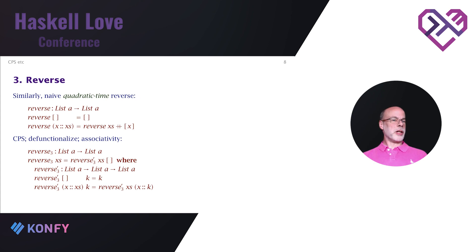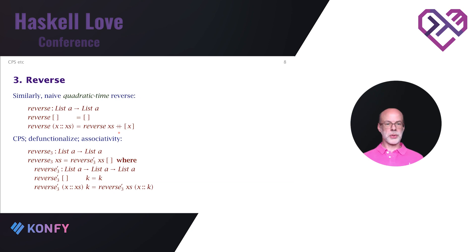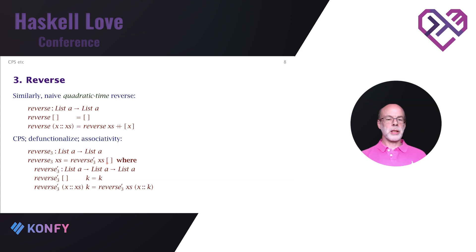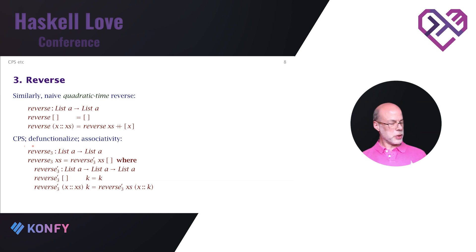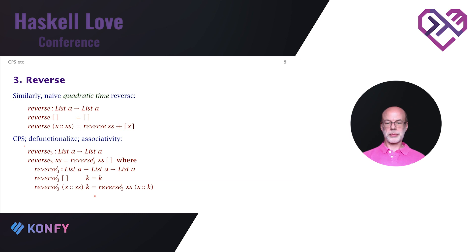Another very familiar use of accumulating parameters is the reverse function. Here's reverse done naively — it takes quadratic time because of the appends. Incidentally, in Idris the colon is used for typing and the double colon is used for cons. There's a well-known fast reverse function that uses an accumulator. You get there by following exactly the same steps: CPS conversion of reverse, defunctionalize the continuations to ordinary data, and then an exploit of associativity to end up with the program you might recognize.